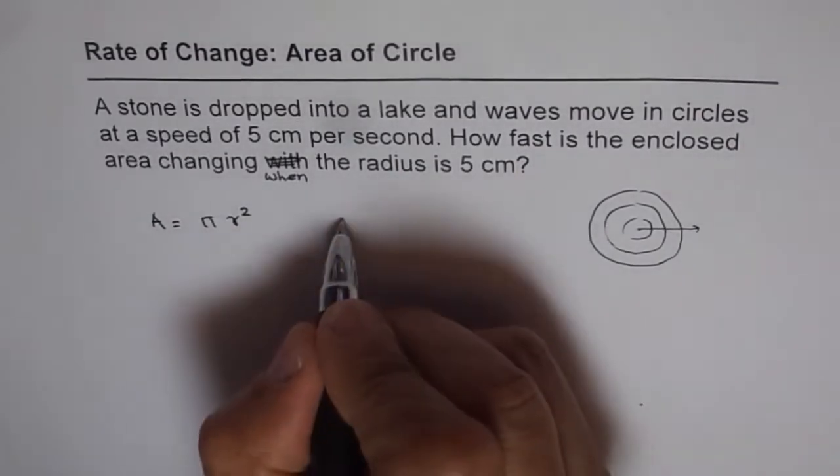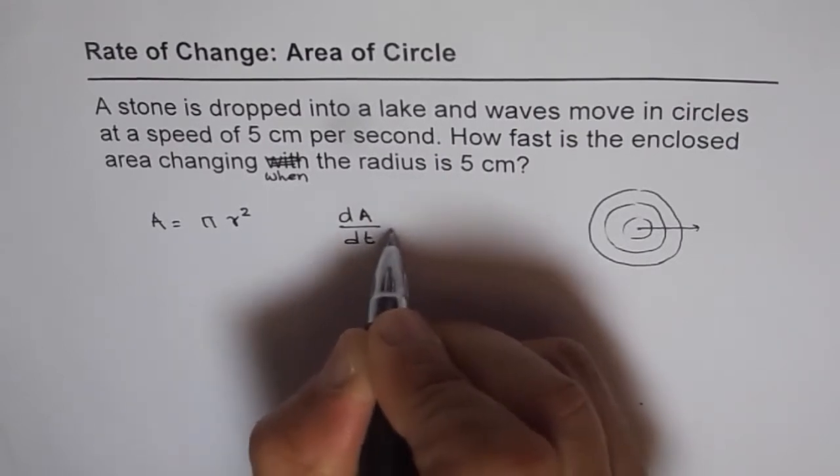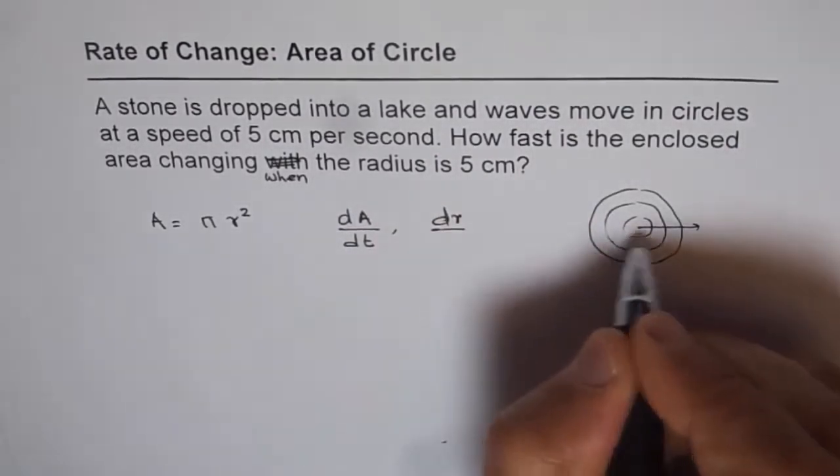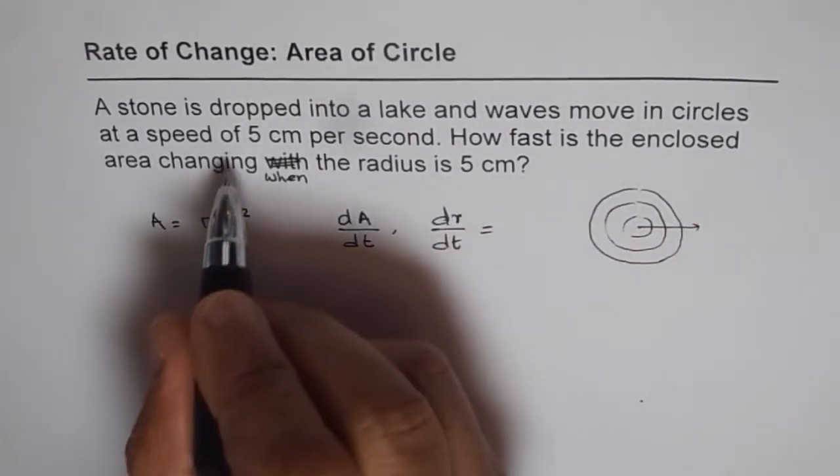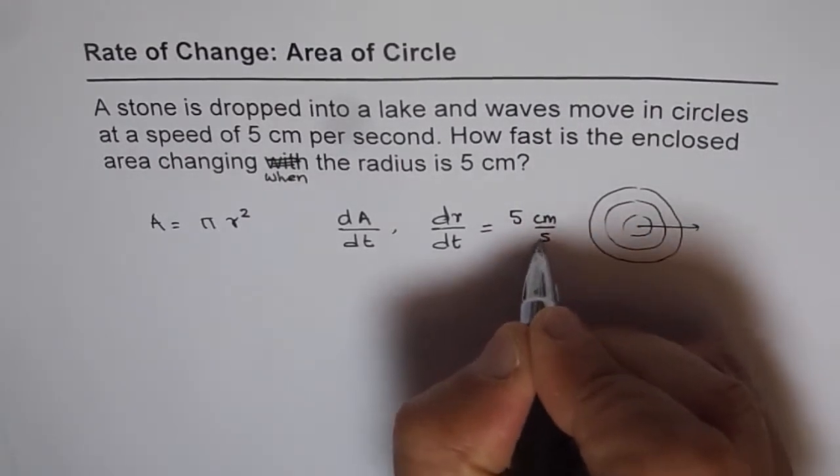And we want to find out what is the rate of change of area with time. And what are we given? We are given rate of change of radius with time, which is 5 cm per second.